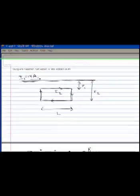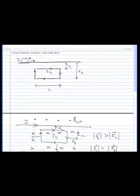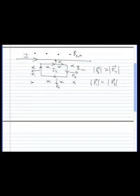So what we have to do is figure out what F2 and F4 are. So F2 is going to be I2 times L cross B. And that's going to equal I2 times L times B because the sine of 90 degrees just gives us 1.